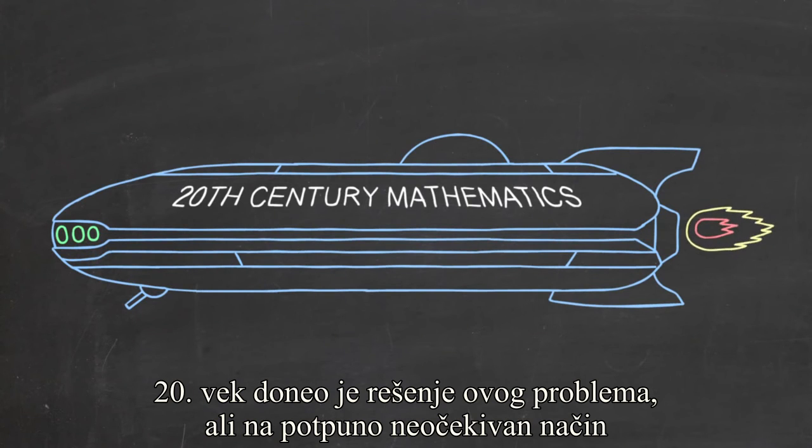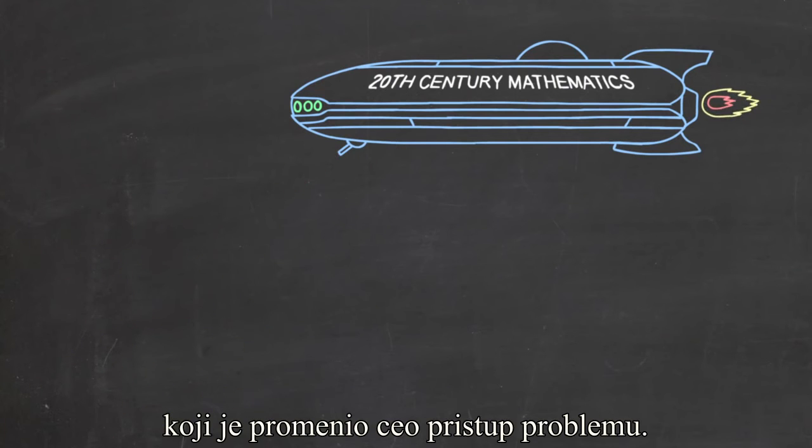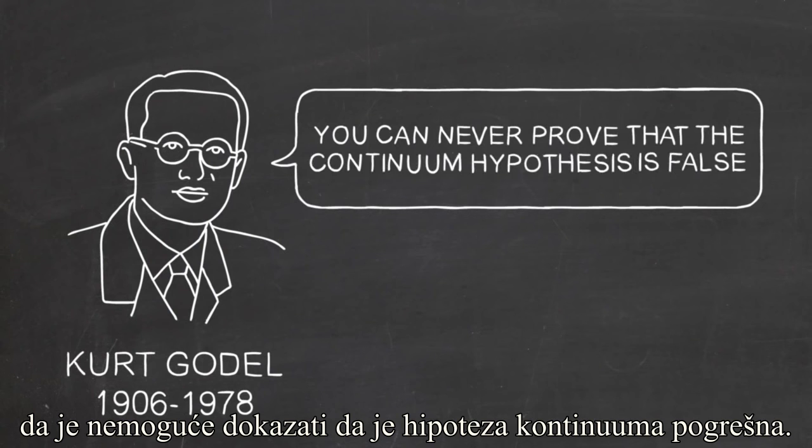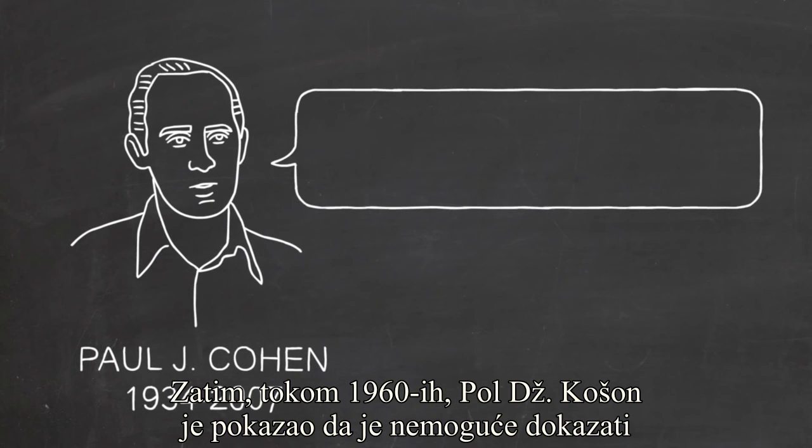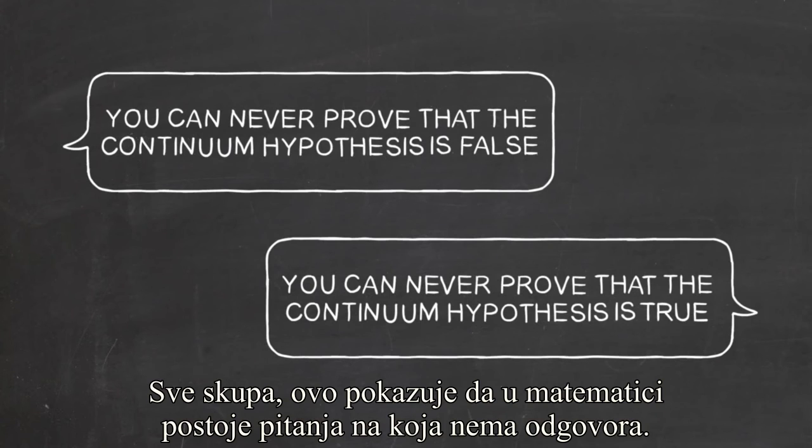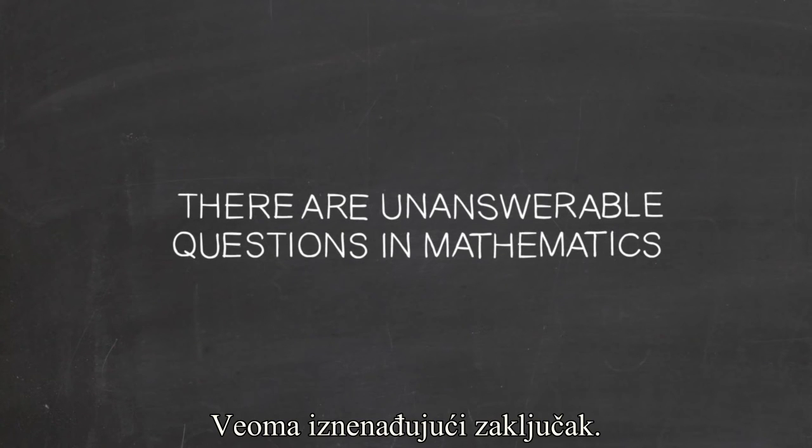The 20th century saw a resolution of this problem, but in a completely unexpected, paradigm-shattering way. In the 1920s, Kurt Gödel showed that you could never prove that the continuum hypothesis is false. Then in the 1960s, Paul J. Cohen showed that you can never prove that the continuum hypothesis is true. Taken together, these results mean that there are unanswerable questions in mathematics, a very stunning conclusion.